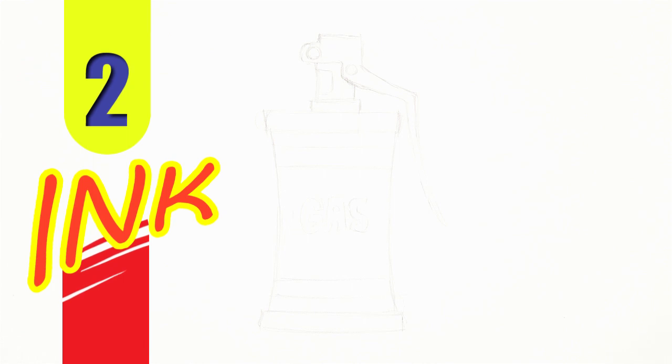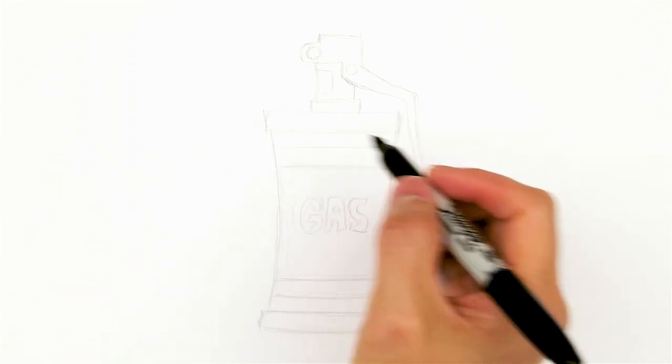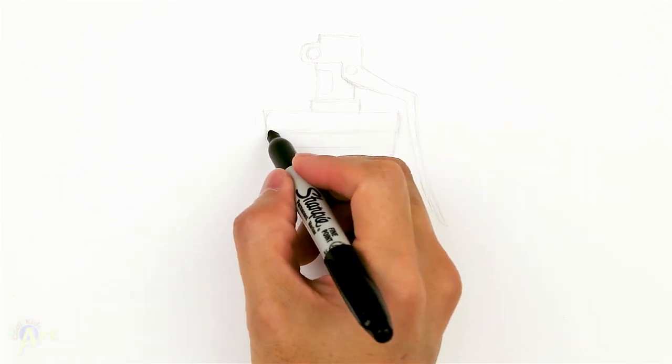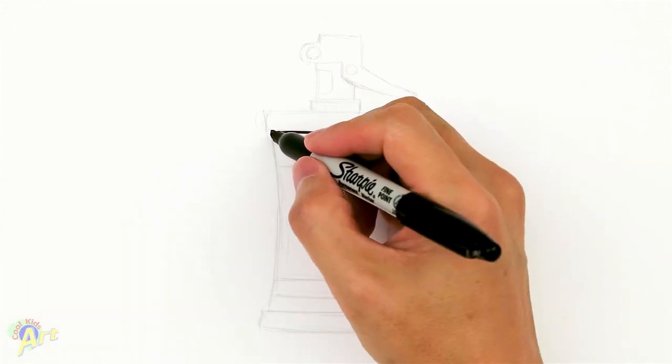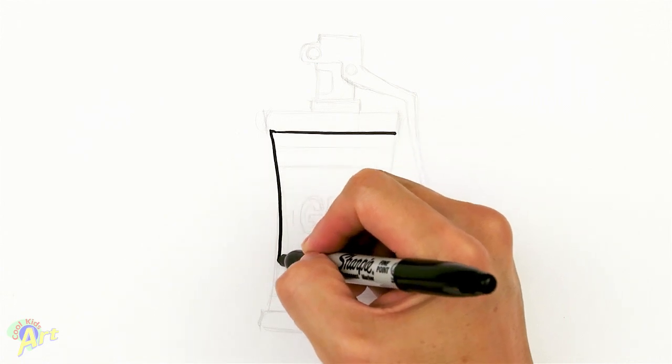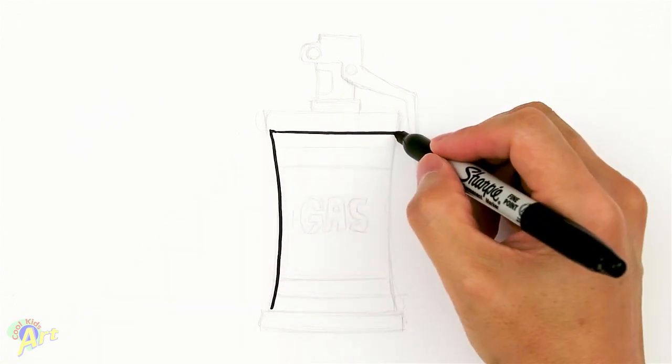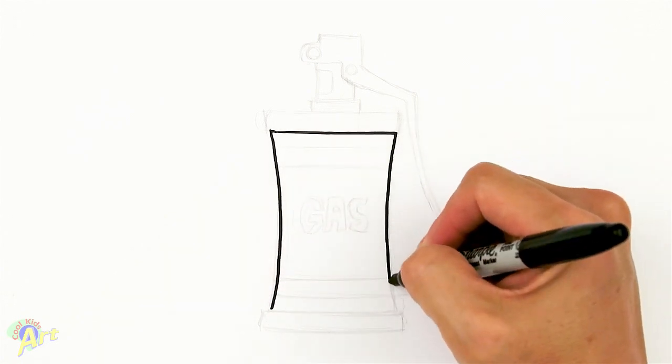Alright so to draw this we're going to draw the canister first so it's going to be just like a cylinder. So from the sides it's going to be a rectangle. But what you want to do is just kind of pinch it in on the side a little bit so that it's not perfectly rectangular.